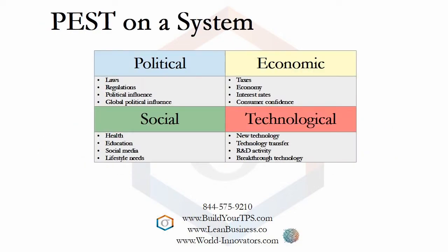Laws and regulations have a political impact on your system. You may be able to influence politics, but only so much. A current example could be the political responses to global warming, which will impact many businesses. Other economic ways the economy can impact a system include taxes and interest rates, both of which negatively impact your growth. Your system may also be impacted by consumer confidence.